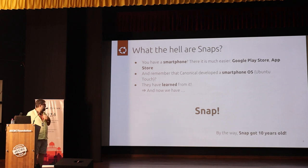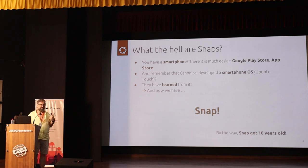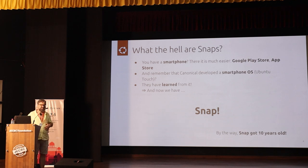At Canonical, we already developed a smartphone operating system, Ubuntu Touch, now maintained by the community. After giving up on Ubuntu Touch back in 2017, they learned from it. They had their packaging system for the smartphone, and out of that packaging system they developed a similar packaging system — and this is Snap. By the way, Snap is already 10 years old, going back to when they still had the smartphone.